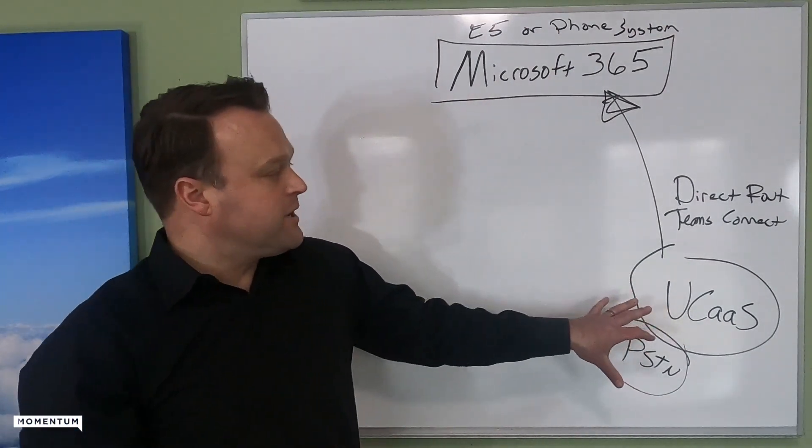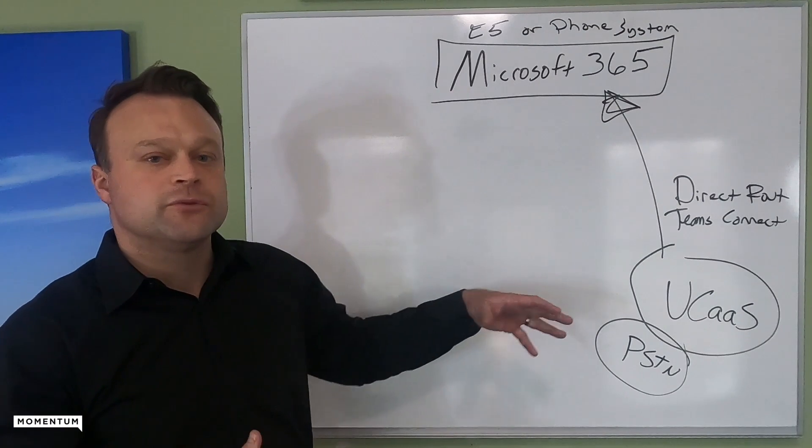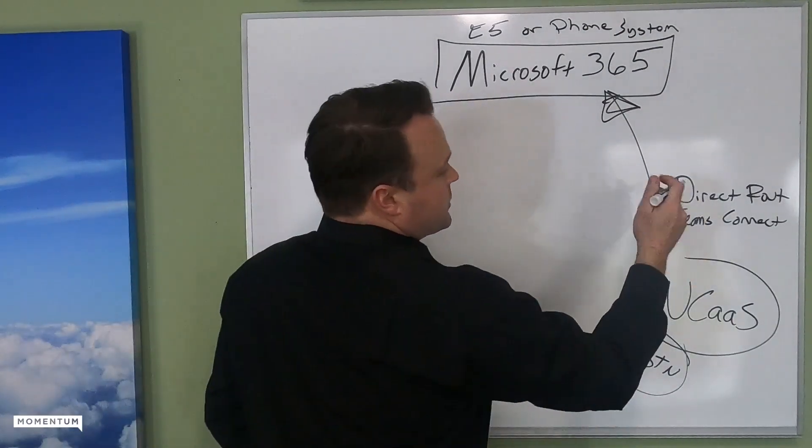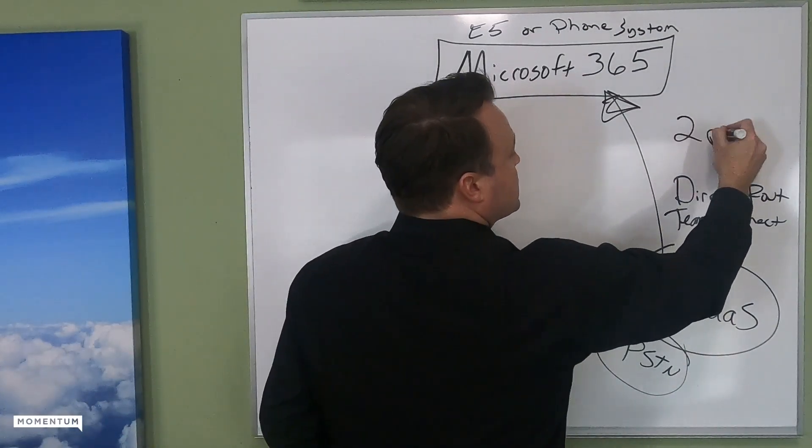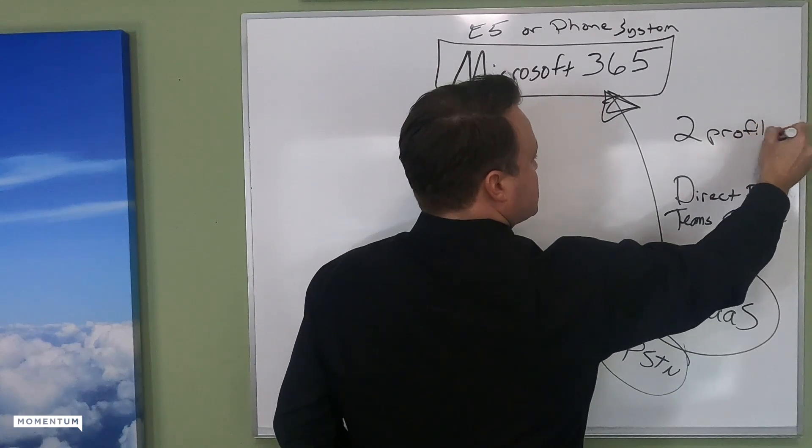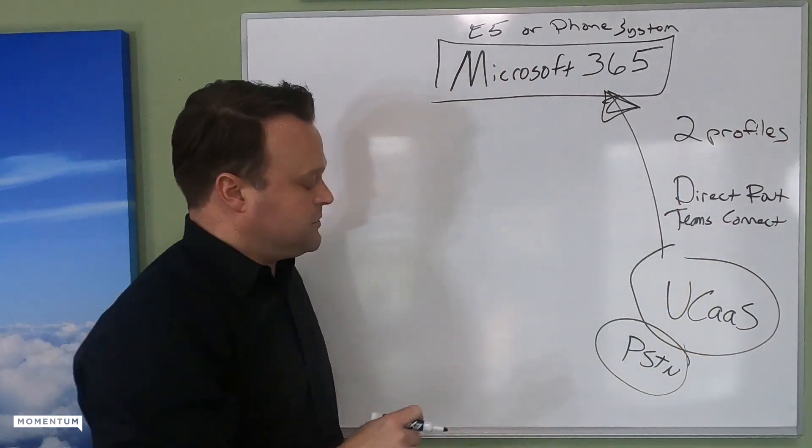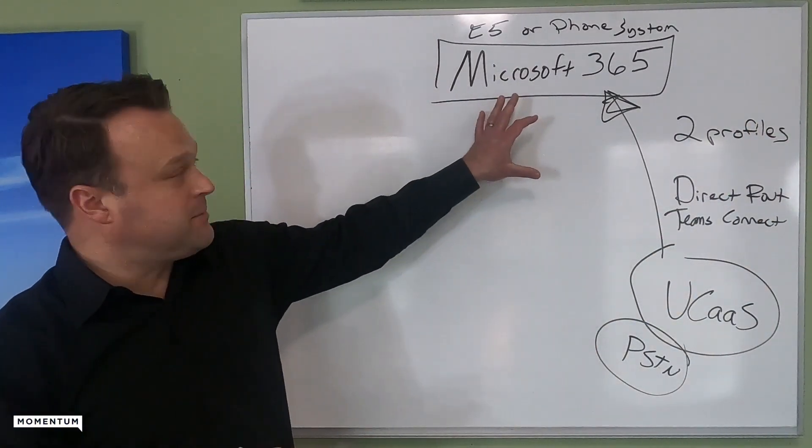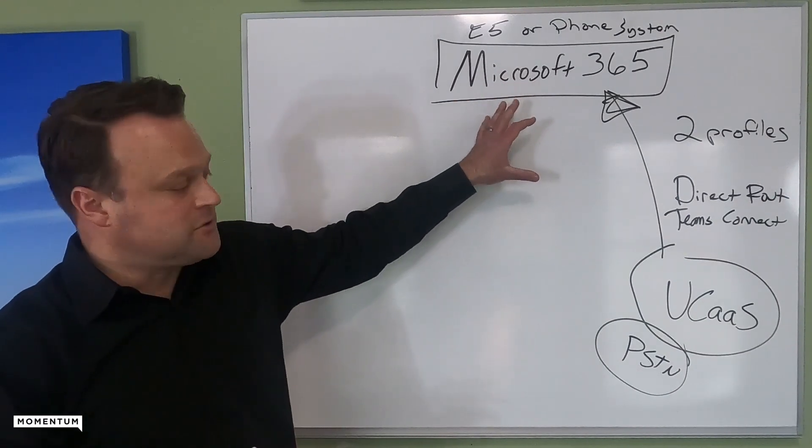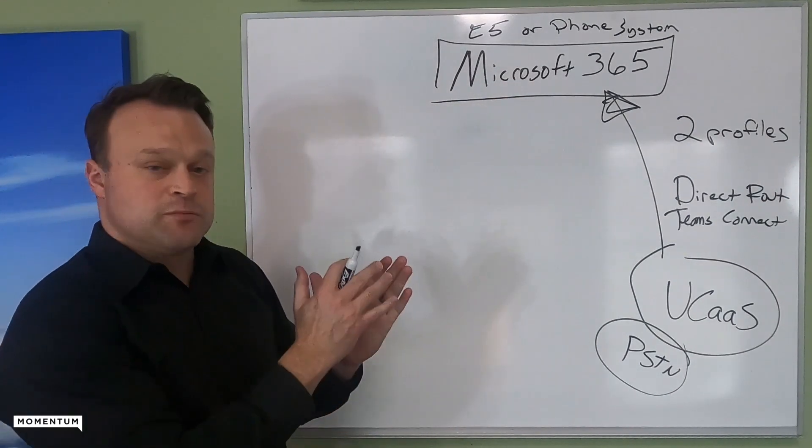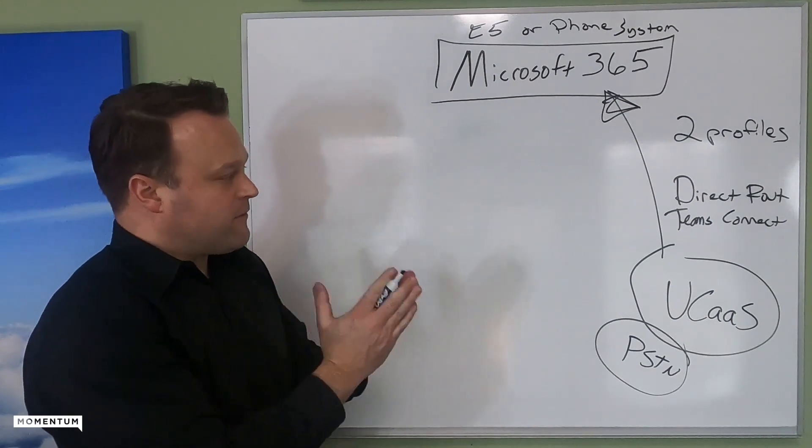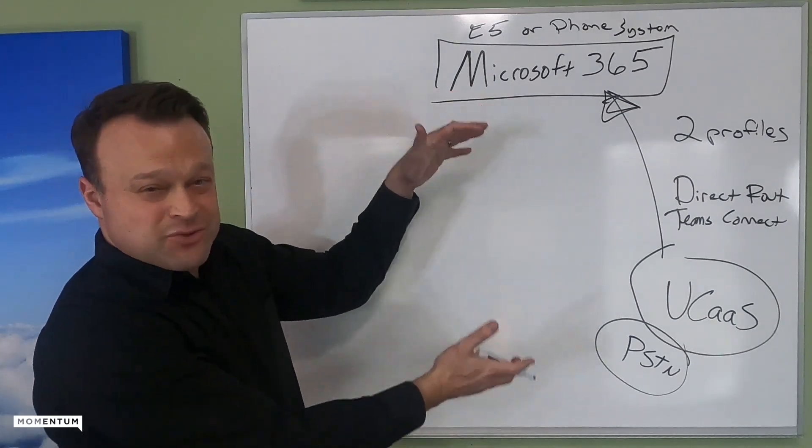Say they're built on this UCAS platform, essentially it's two phone systems talking. So direct routing Teams connector essentially creates two profiles in a sense for the end users. They're built down here and they're also built up here in Active Directory with Microsoft. So it allows the end user to use Microsoft Teams as the front end, but essentially you have two phone systems talking.